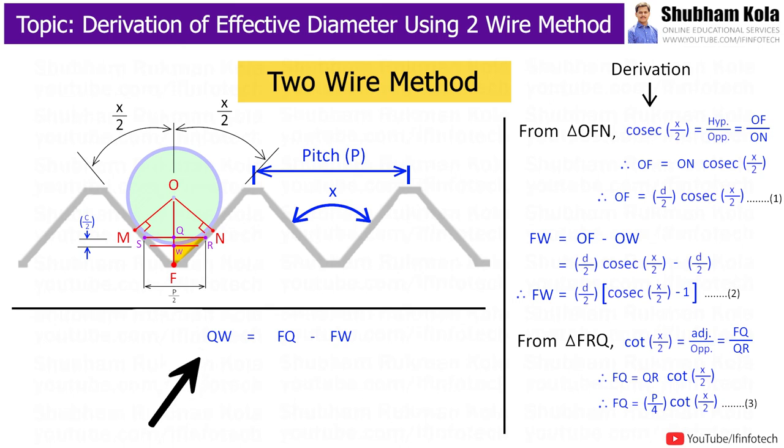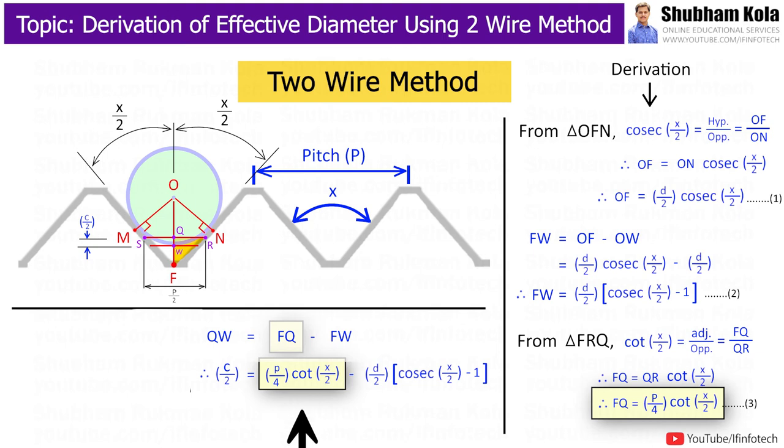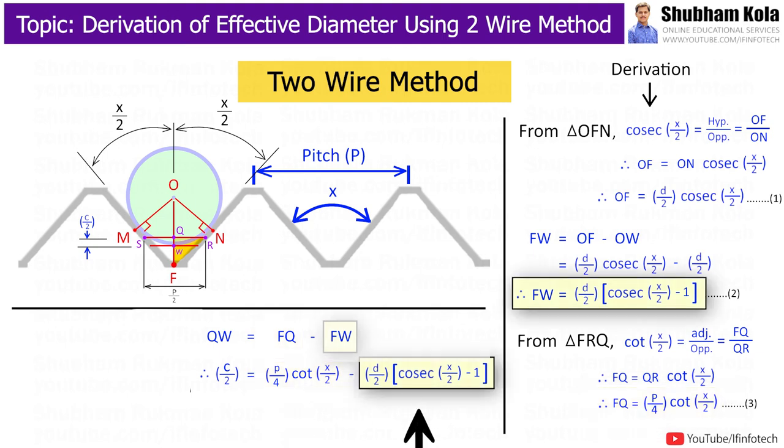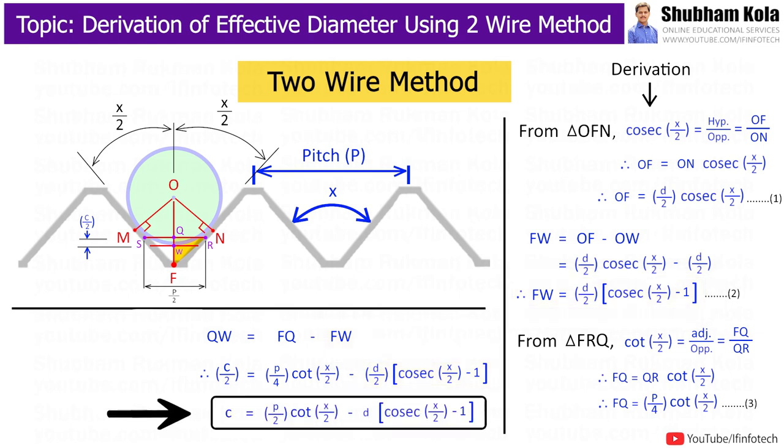In dimension qw, which is equal to fq minus fw. Here we have fq from equation number 3. And fw, we got it from equation number 2. So, this equation for constant C, that we are going to use to calculate effective diameter.